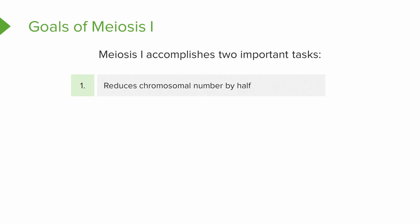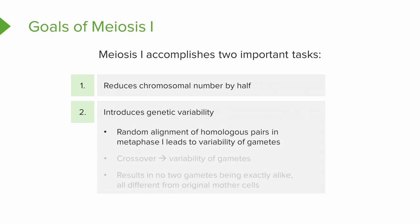The important tasks accomplished by meiosis I are: first, reducing the chromosome number by half; and second, introducing genetic variability. We introduce variability because of the random alignment of homologous pairs in metaphase I, and also because of crossing over in prophase I, which gives us variability in our gametes. As a result, no two gametes will be exactly alike, and all of them will be different from the original cells.